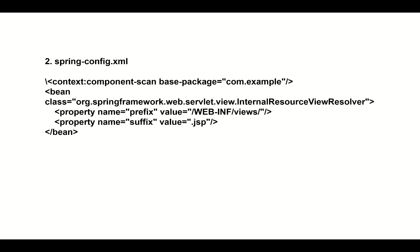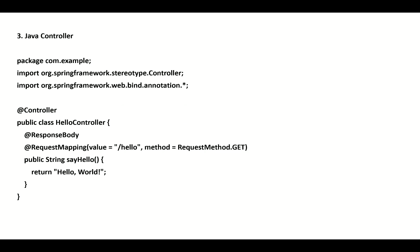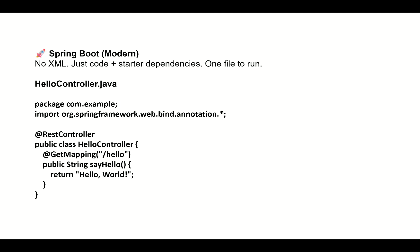In springconfig.xml you configure component scanning for the package com.example, and define a bean for InternalResourceViewResolver. In the Java controller, you write the package com.example, import the annotations, add the @Controller annotation, add @RequestMapping with the endpoint /hello, and specify the method type as RequestMethod.GET. This is the type of configuration required in Spring Framework.